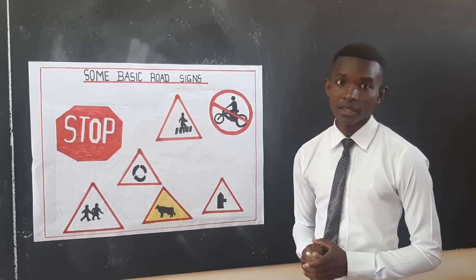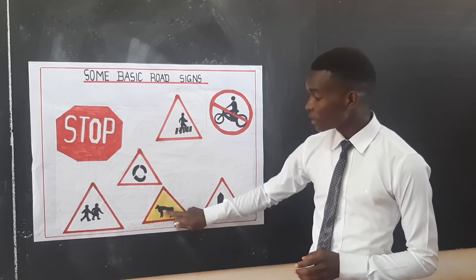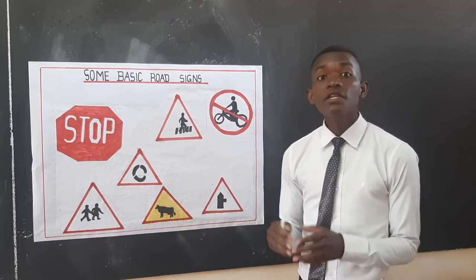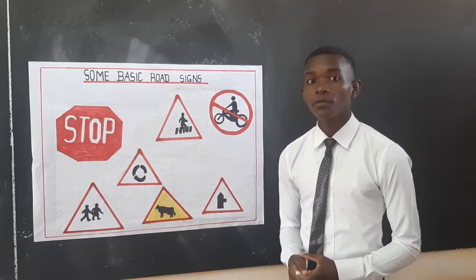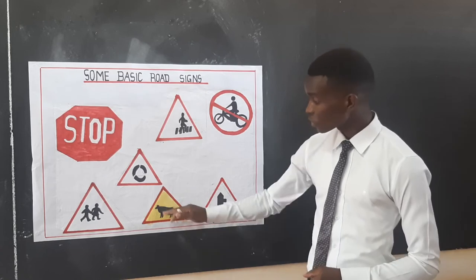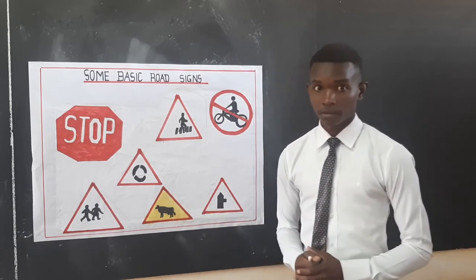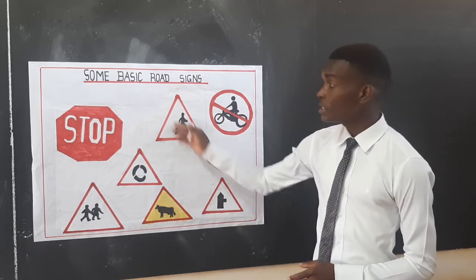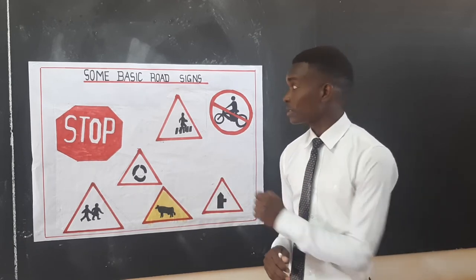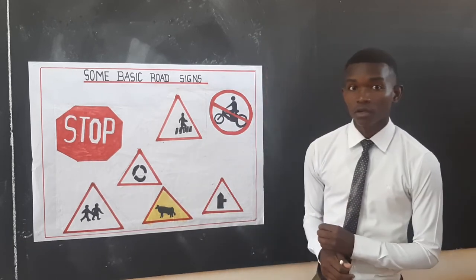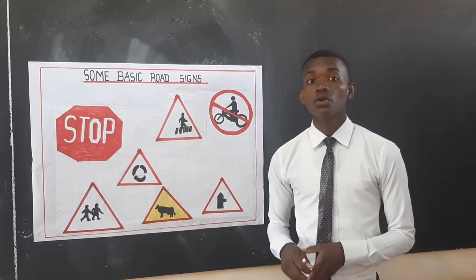There is also this other sign that is near farms where they keep cattle. This simply means that there are cattle crossing. So these are some of the basic road signs — I just picked a few — and whenever you see this, you need to slow down.